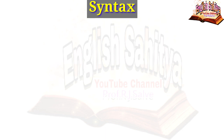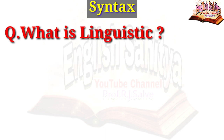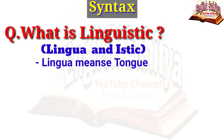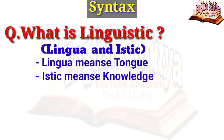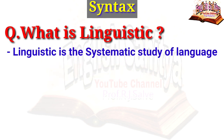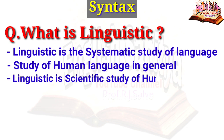I am Professor Rohi Salve and in this video we will discuss very important components in grammars, also in linguistics. Firstly, we will discuss what is linguistics. The word linguistic has been derived from two Latin words: lingua and istic. Lingua means tongue and istic means knowledge. We can say that linguistics is a systematic study of language — not of one particular language but of human language in general. Linguistics is a scientific study of the system and principles underlying human languages.